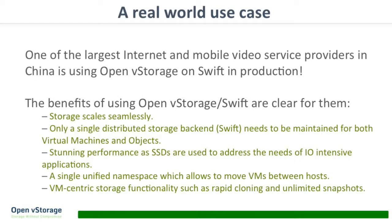This is not a pet project — it's real business with large customers in production. For example, one of the largest internet and mobile video service providers in China — the YouTube of China — is using OpenVStorage on top of Swift in production. For them, it's easy: they only maintain one platform, Swift, as their object store. It scales so they can always add more data. They had problems with databases, but no longer, because we provide the block interface. It also supports live migration and vMotion, giving a unified namespace to move databases from host to host — something they couldn't do with local disks.